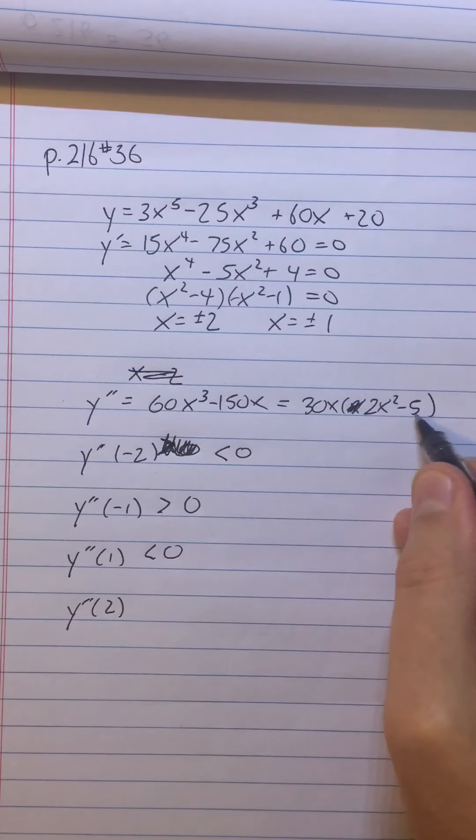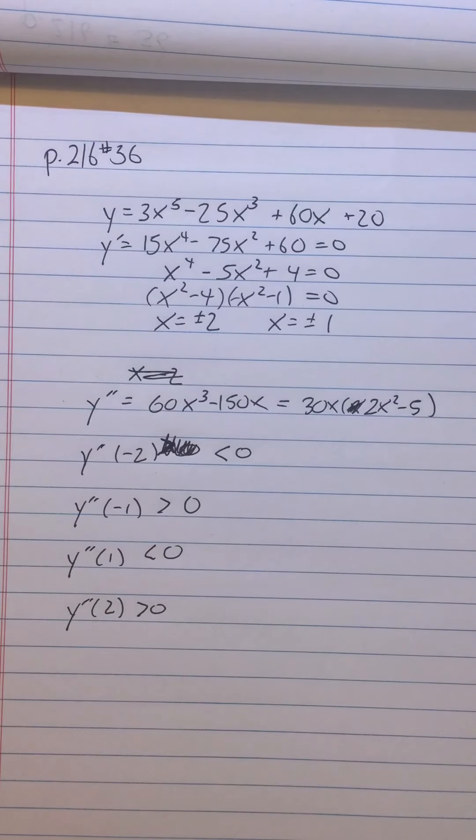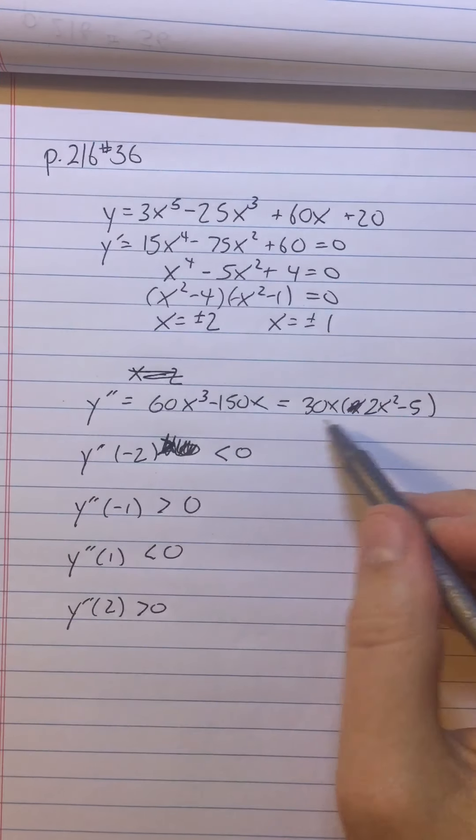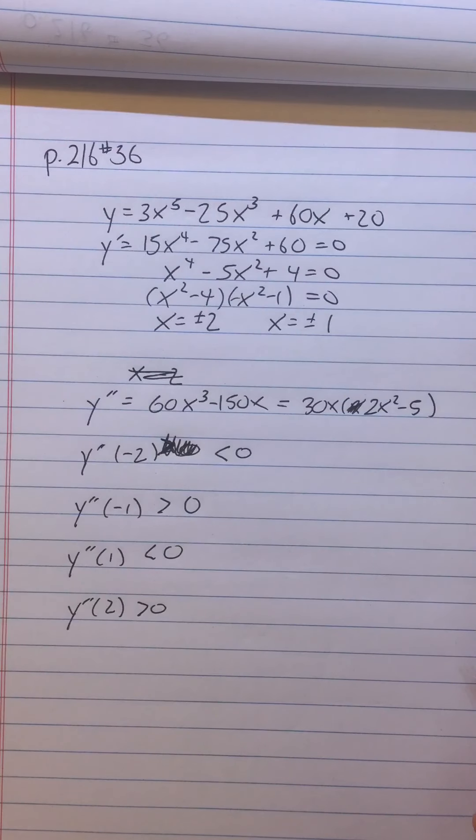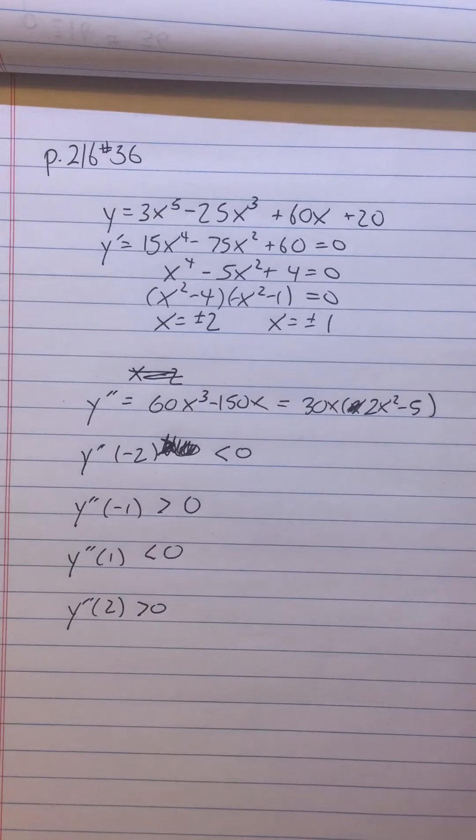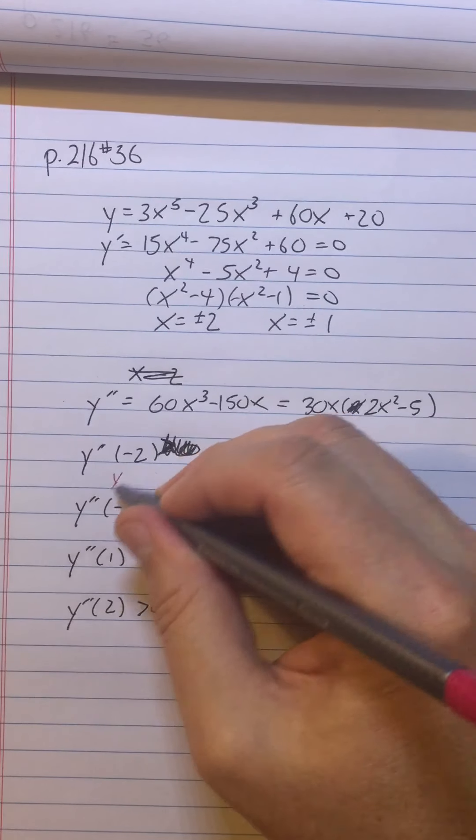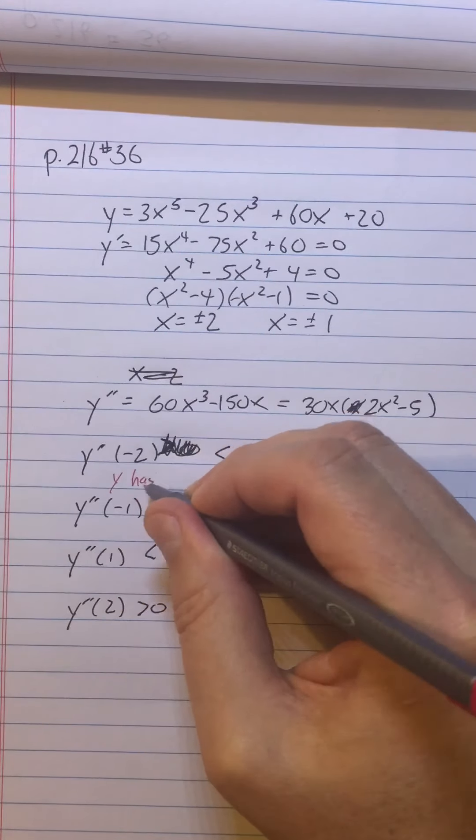So notice that I didn't even bother to work out exactly what y'' of each of these values is. I can already determine their sign by looking at the factored form. But you can also just put in -2 and plug it out and see what you've got. So since this is negative, I know that y has a max at -2. Oh, I guess I have to figure out the y coordinates of all these. That's going to suck.